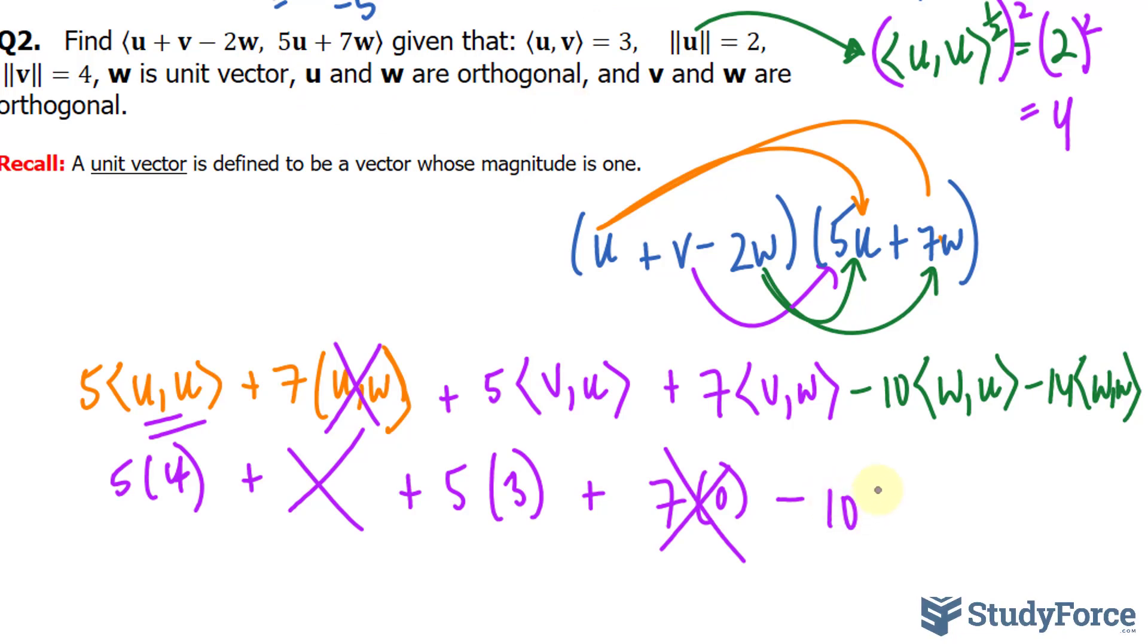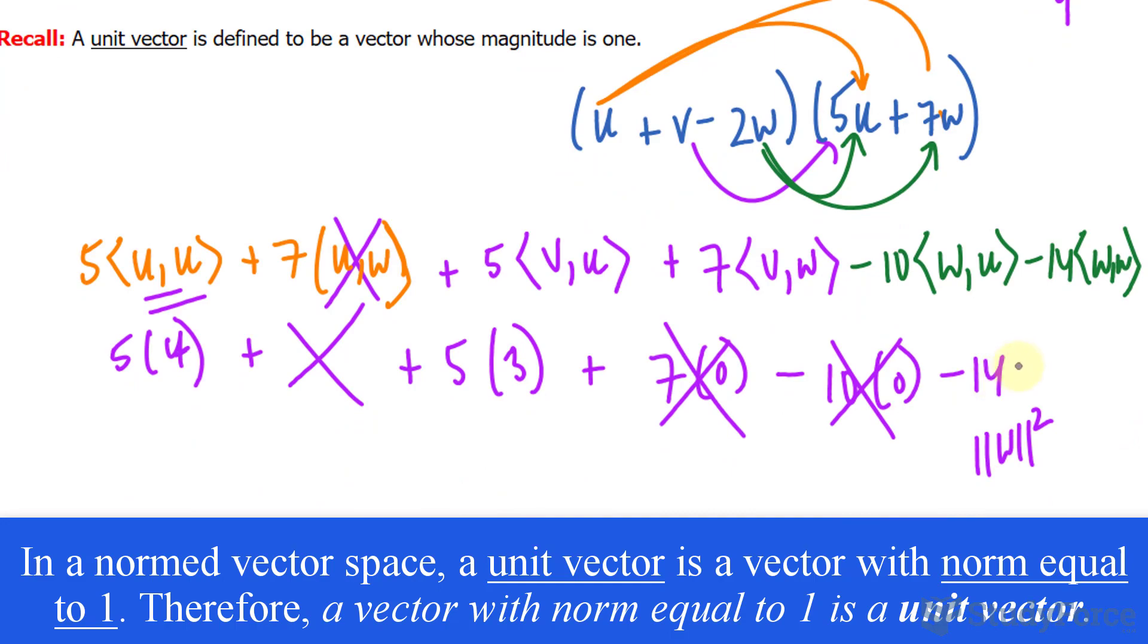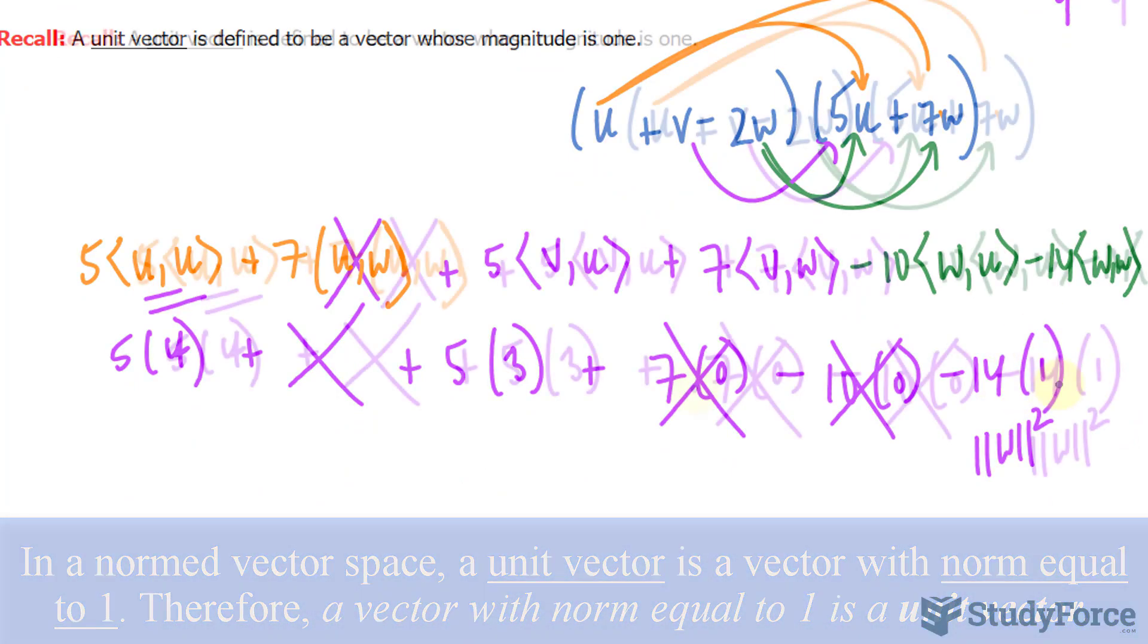Minus 10wu. That's easy again. u and w is orthogonal. And lastly, minus 14 in this part, the inner product of w. We're told that w is a unit vector, so that's like saying the norm of w raised to the power of 2. In order for it to have a magnitude of 1, w has to equal to 1.